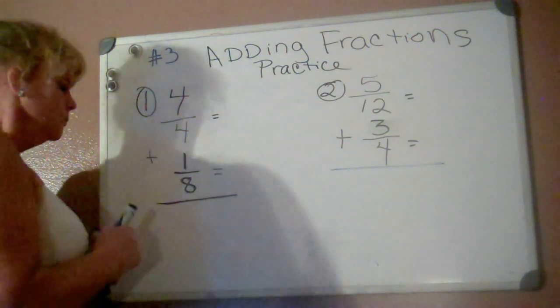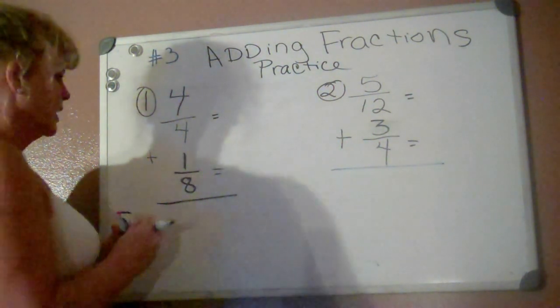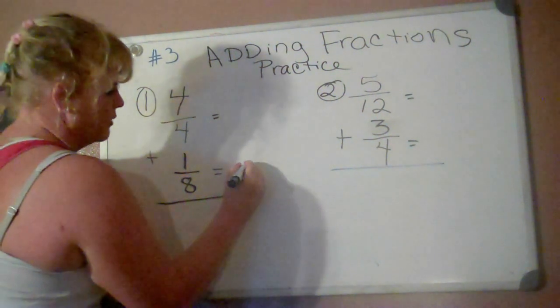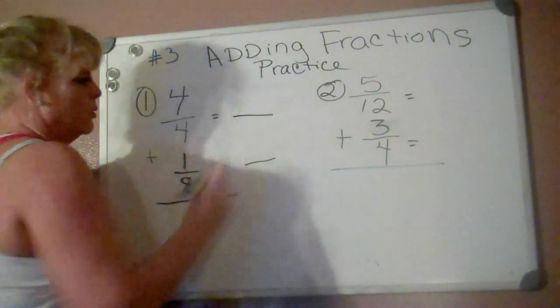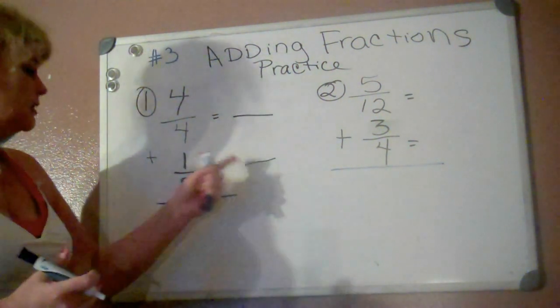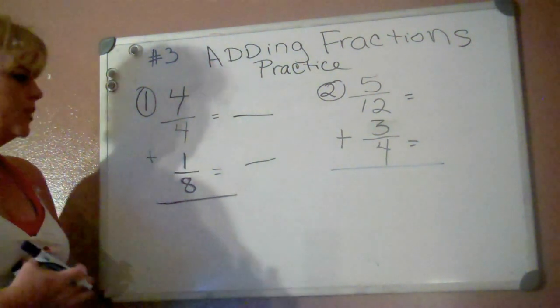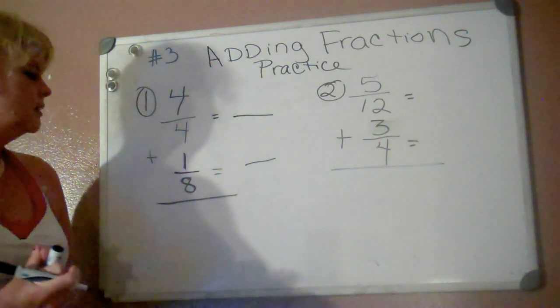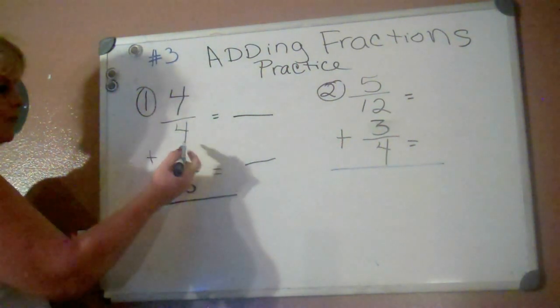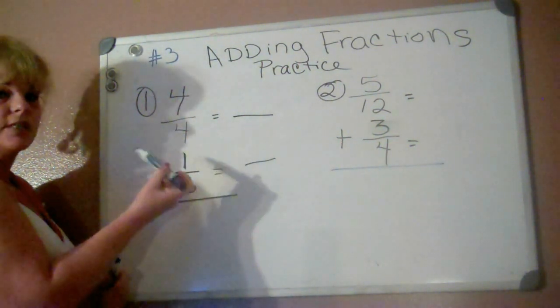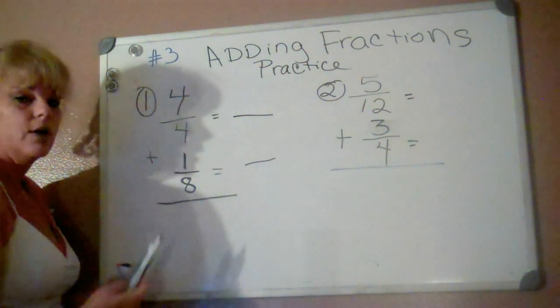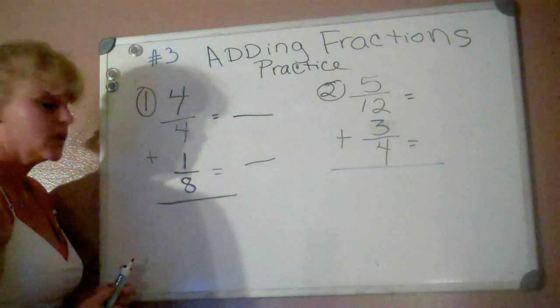Anyways, I went ahead and did the equal signs here, and I'm going to go ahead and put my fraction signs here, because we know that underneath these signs, we're going to have to put our least common denominator that both of these go into. Anyways, I'm going to start off saying can four go in itself, and it can one time, of course, and can four go into eight, and it can, it can go twice.